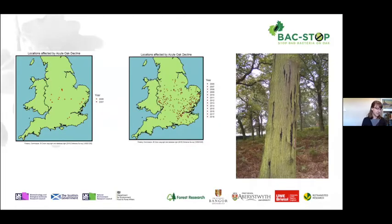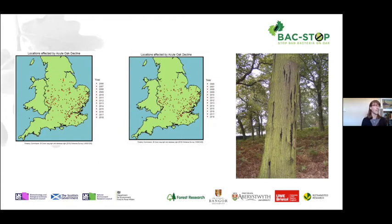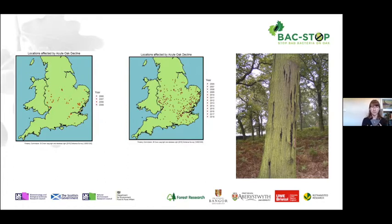However, oak is threatened by acute oak decline. Michael's going to talk more about the role of AOD and the beetle. Locations being affected by acute oak decline continue to rise, and based on climate modelling, we expect that to continue. Work package two is considering contextual impacts, for example drought. And this is an oak tree here suffering with AOD.